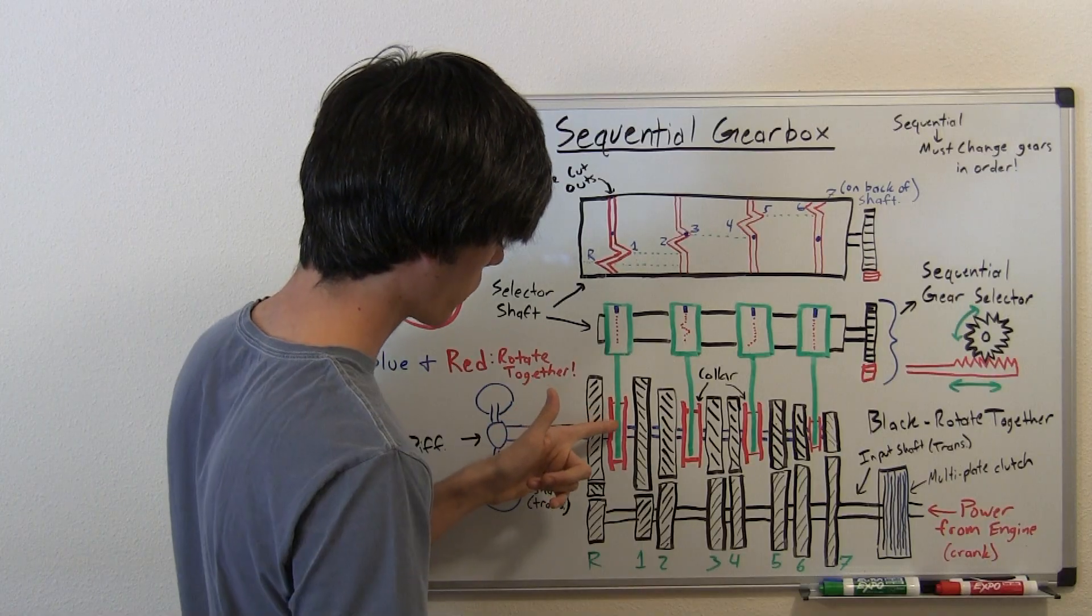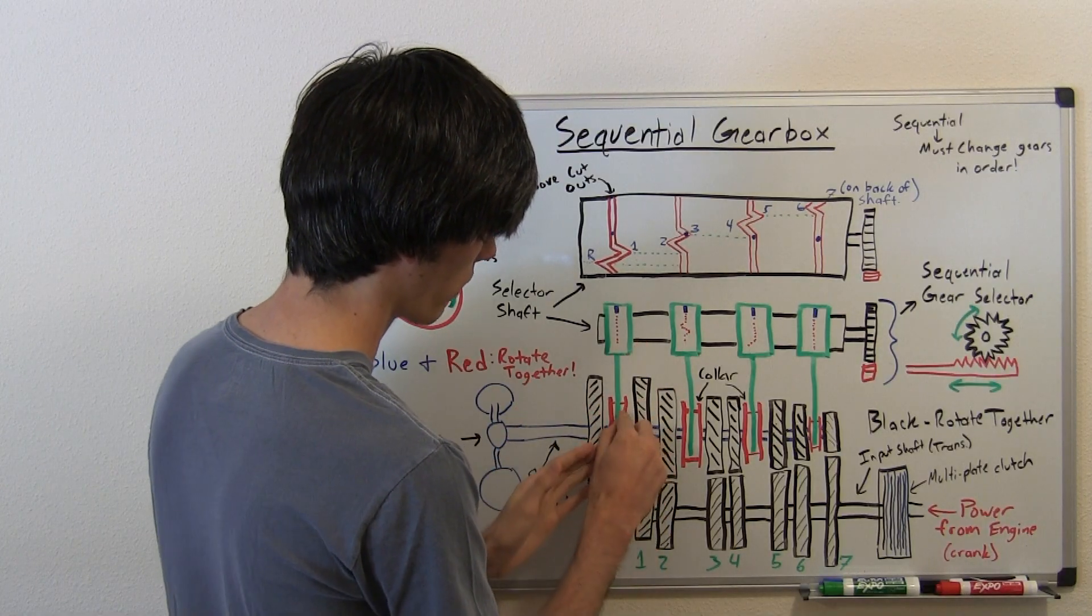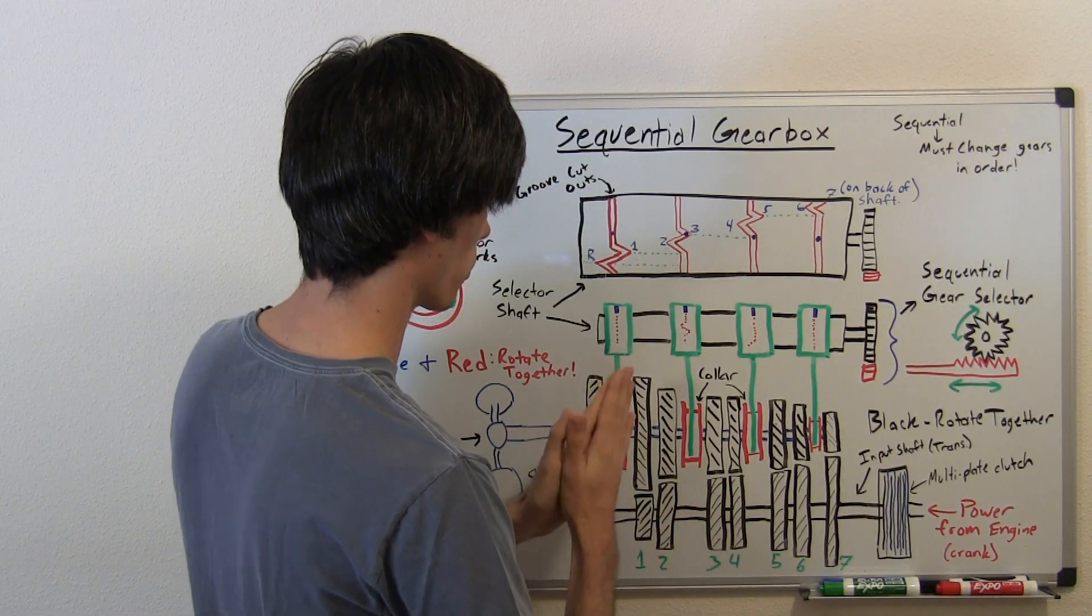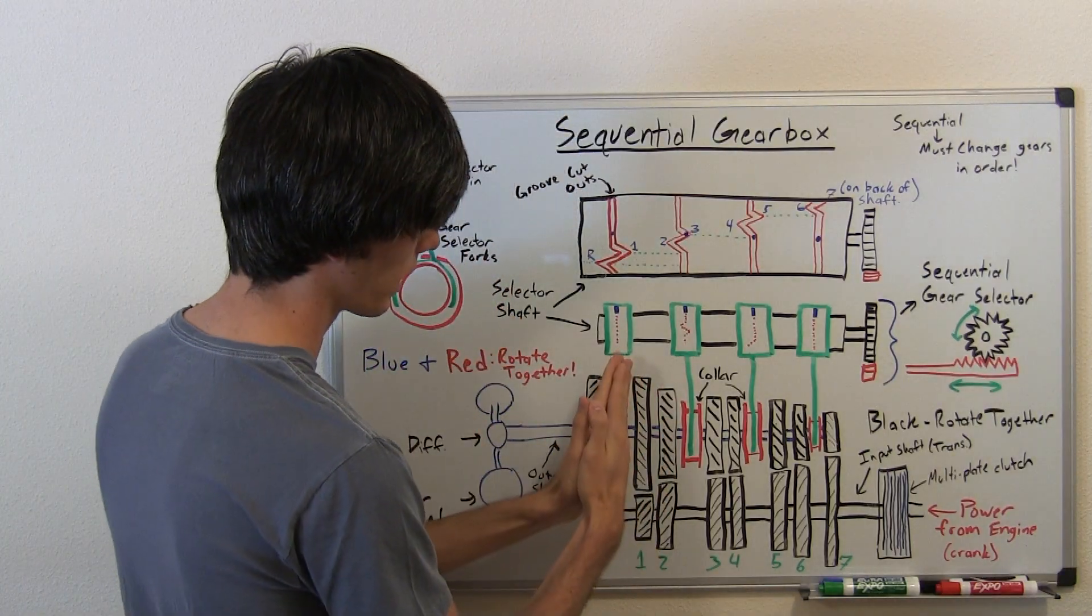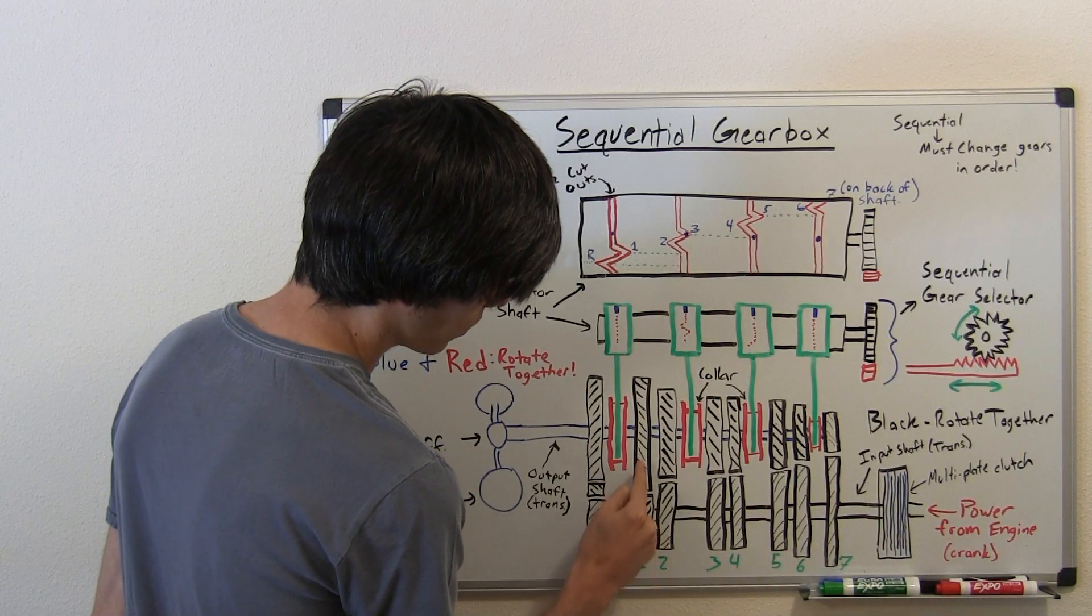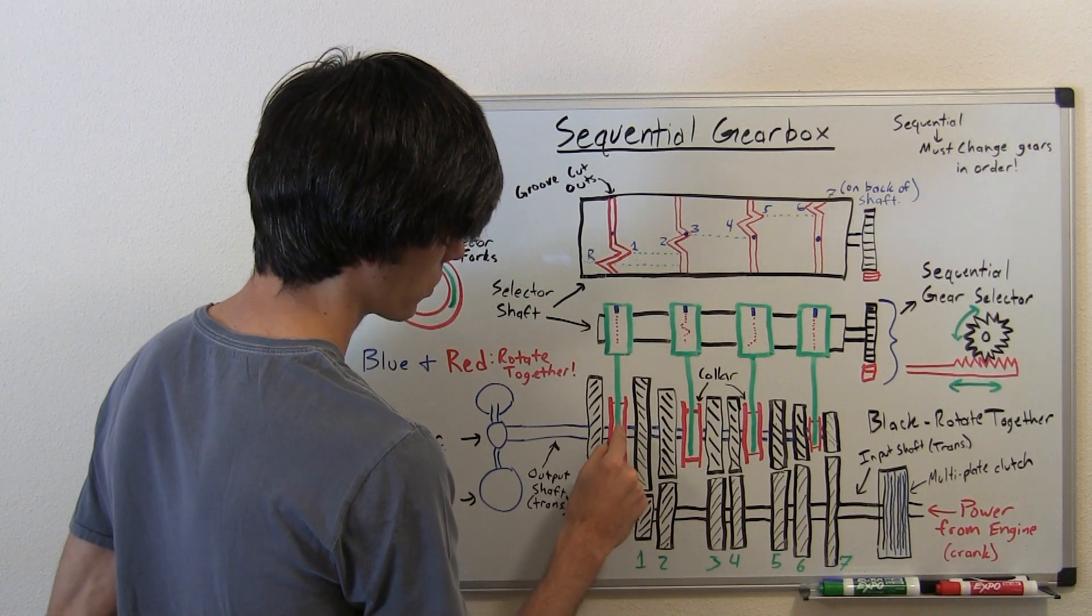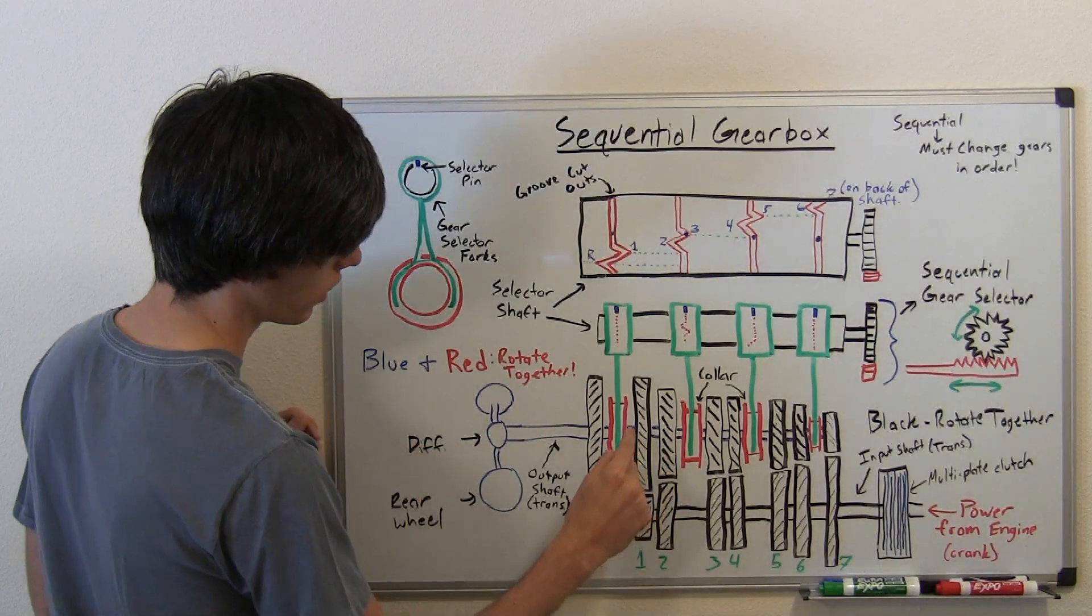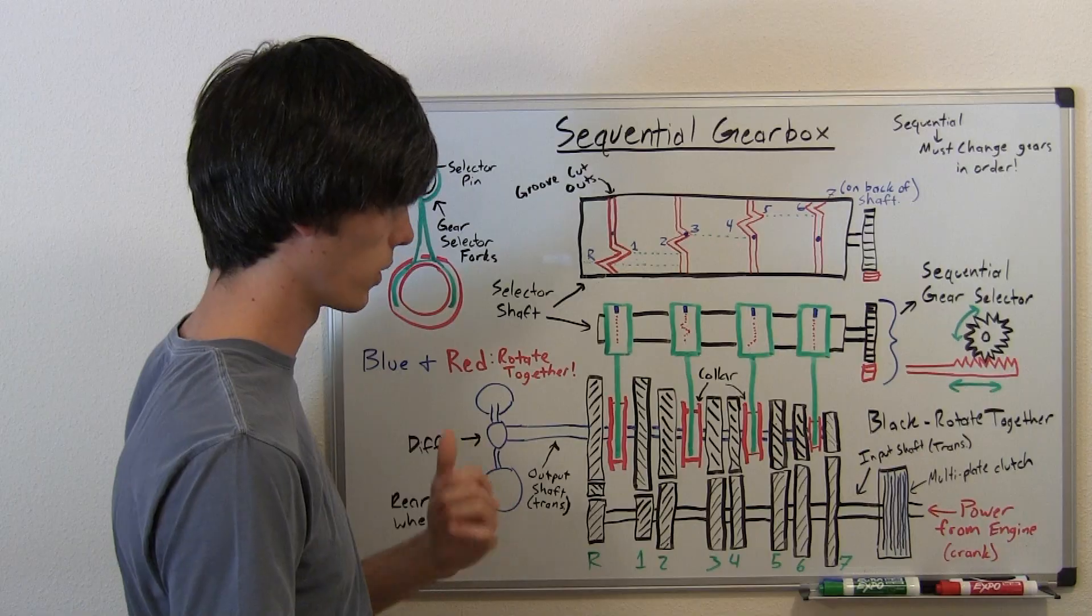So if you're in first gear, you've meshed this collar with this gear here, connected them together. They'll have teeth and it'll mesh them together, and you've got synchronizers which can help make that process smoother. So you've got your power, it'll go in, go from this gear to this gear. From this gear it will go to the collar, and then the collar will transfer that torque to the blue output shaft. Once it goes to the blue output shaft, it goes to the rear differential, it spins your tires. That's what you want to happen.